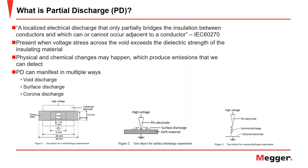PD activity is present when the voltage stress across a void in an insulating material exceeds that material's dielectric strength. When partial discharge activity takes place, many different physical and chemical changes may occur, producing emissions that allow us to detect it. These can come in the form of dielectric losses, electromagnetic transients, pressure waves, sound, light, heat, and even chemical reactions. Some PD activity can produce ozone, which is particularly an issue in encapsulated environments due to its corrosive nature.